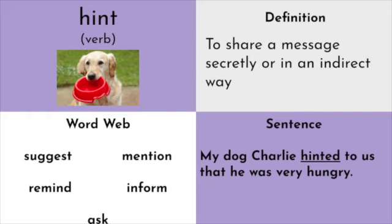Hint is a verb. You might have heard of hint as a noun — like "give me a hint." The verb is not that different. Hint the verb means to share a message secretly or in an indirect way. Word web words: suggest, mention, inform, or ask. Our sentence: my dog Charlie hinted to us that he was very hungry. A hint means you're not directly saying something, but trying to get the person to guess what you're saying. For example, if you wanted new sneakers for your birthday, you might hint by saying, "Oh boy, look at all the holes in my shoes — sure do wish I could get some new sneakers."